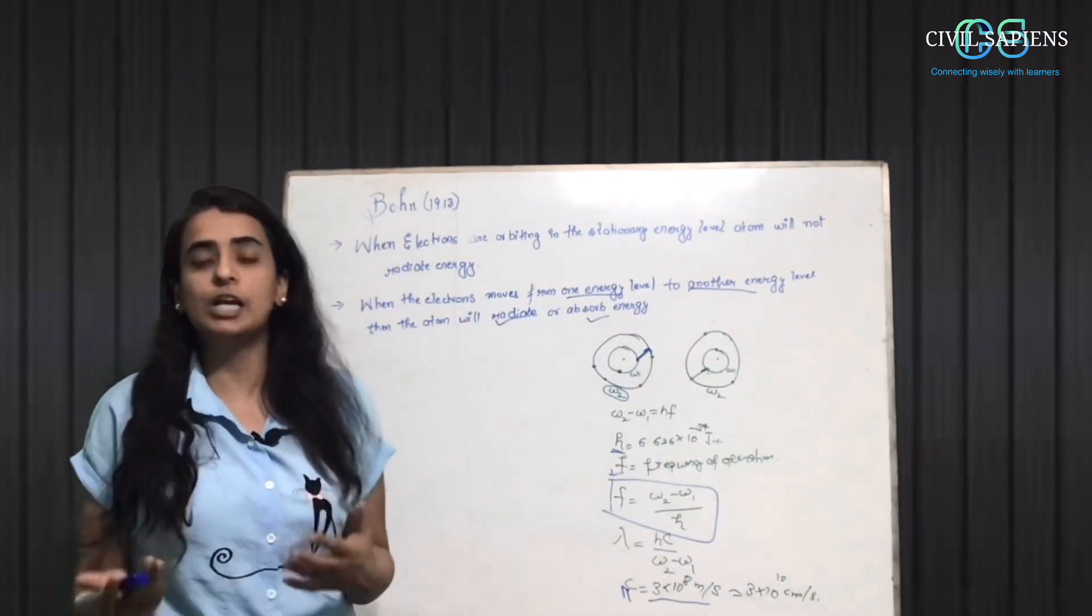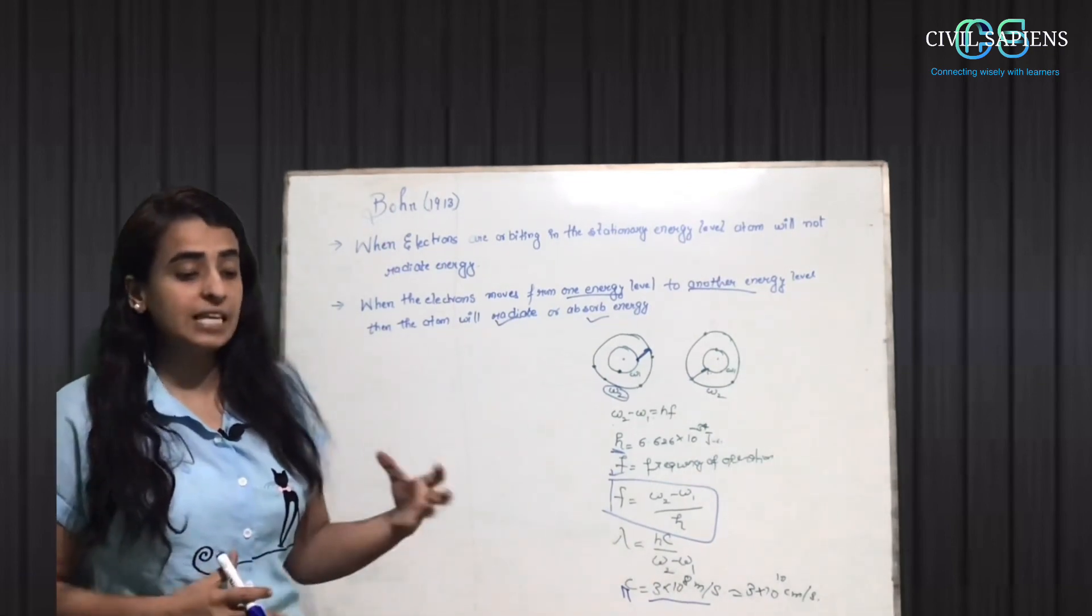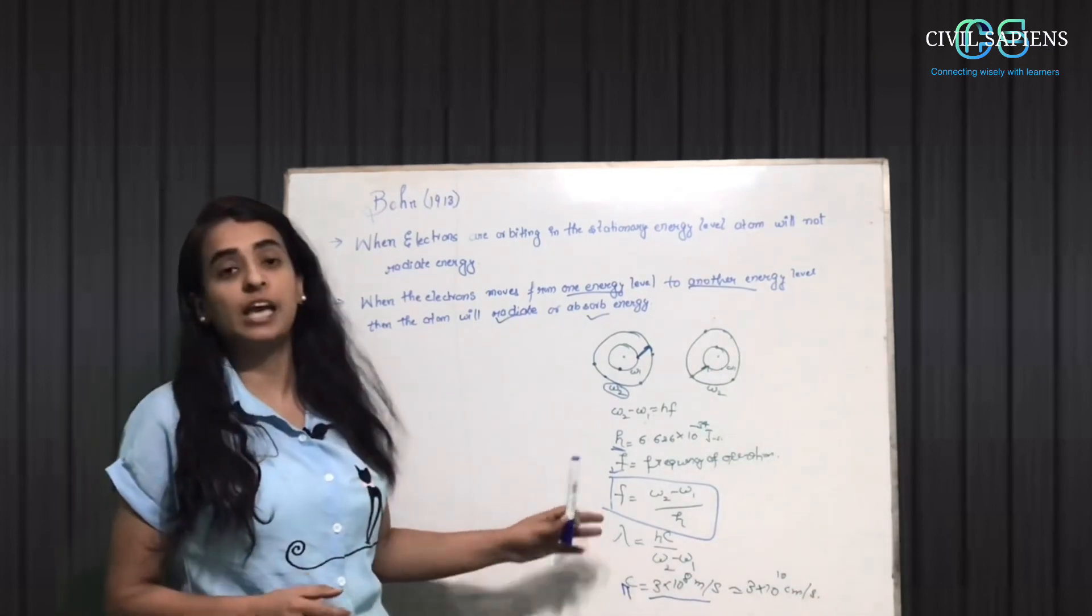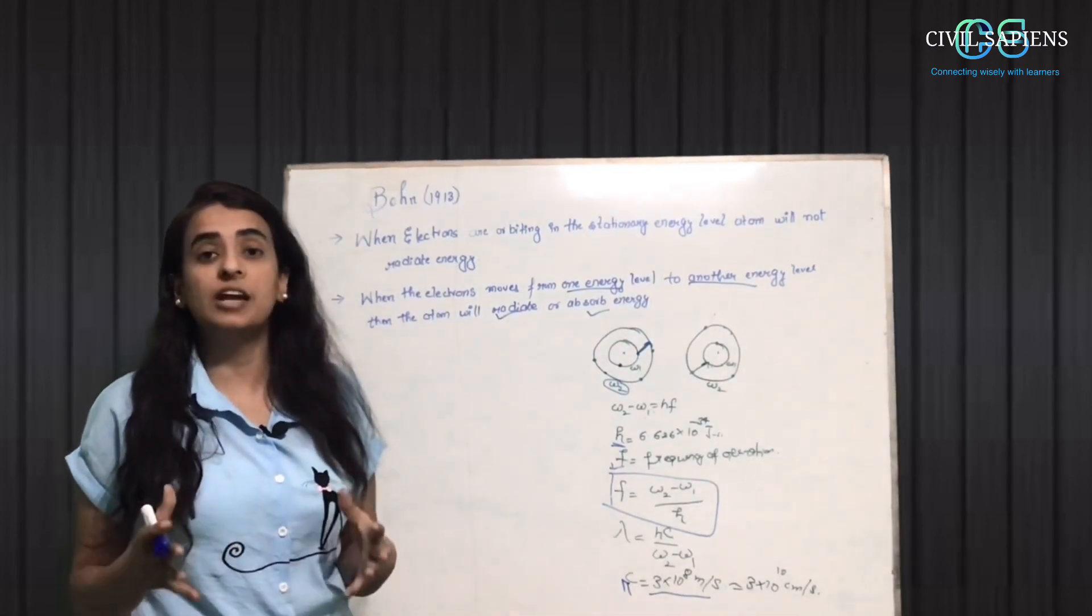We know that when the energy is radiated and absorbed. Now we will see semiconductors. This is a property of semiconductors which is used in electronics.